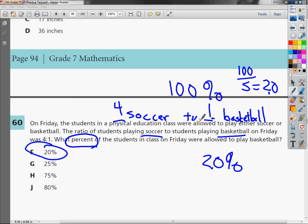And 1 part of 5 parts out of 100% is 20%. So my answer to number 60 is F.